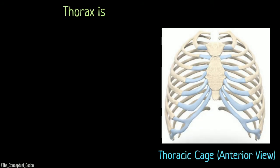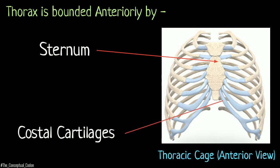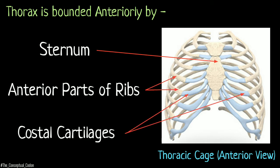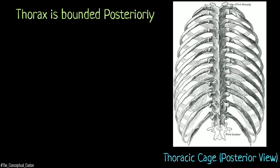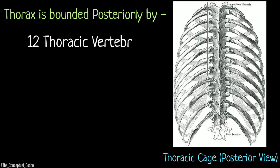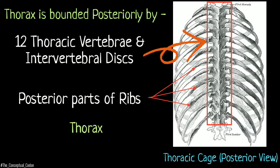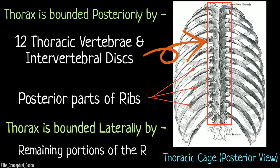The thorax is bounded anteriorly by the sternum, costal cartilages, and anterior portions of the ribs. It is bounded posteriorly by the bodies of the 12 thoracic vertebrae and posterior portions of the ribs, and bounded laterally by the remaining parts of the ribs.